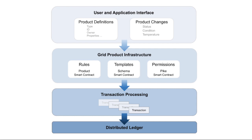Rules: in a distributed ledger, smart contracts encode the logic of the system. They ensure the validity of any new data that is shared through Grid. In the case of product, the smart contract ensures that the product data actually adheres to the template that we defined earlier.